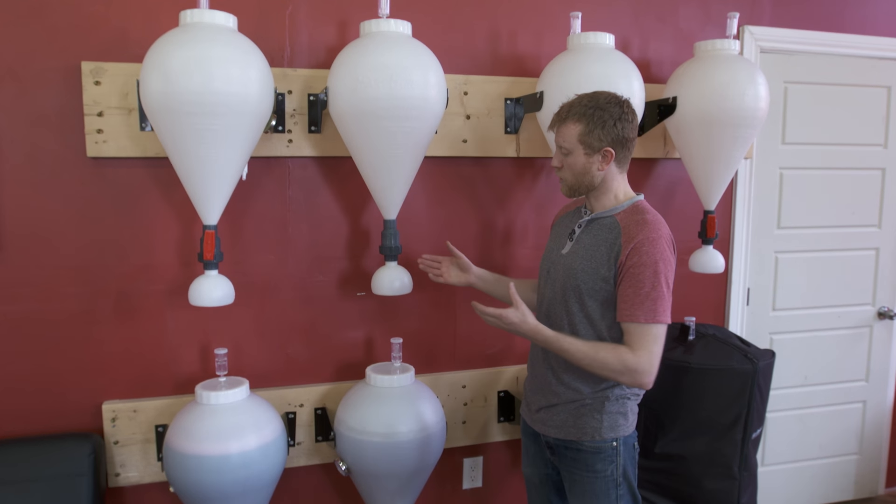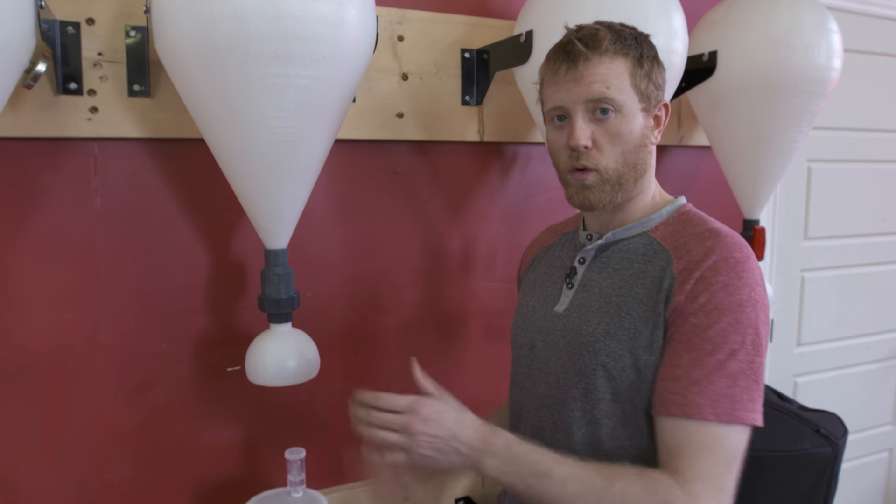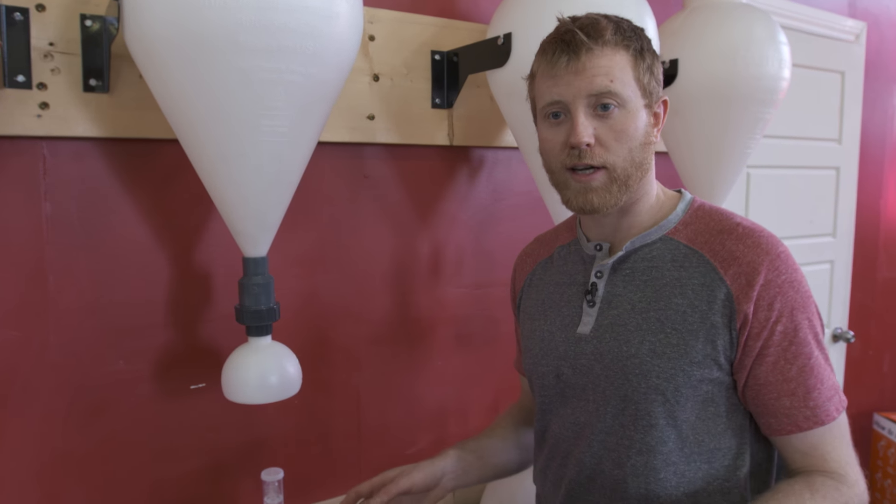We can bottle and keg directly from the fast ferment. So we just put the filling hose attachment on. We're going right into bottles or kegs. Very easy.